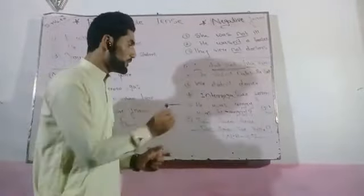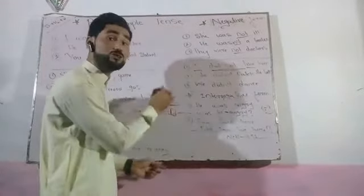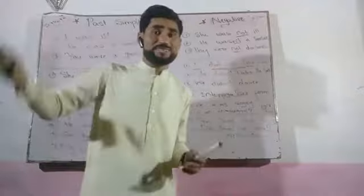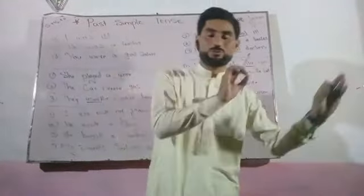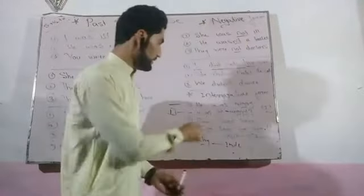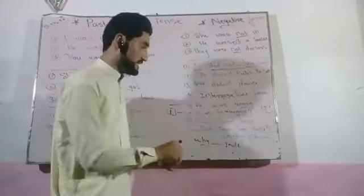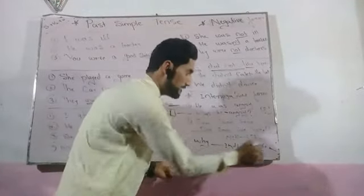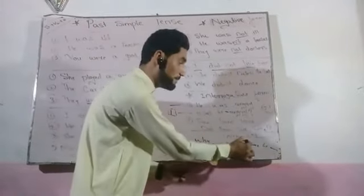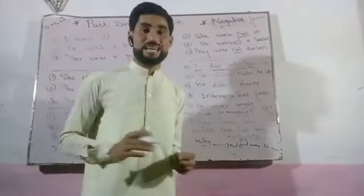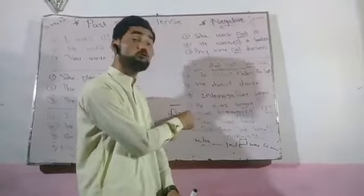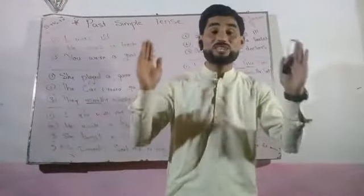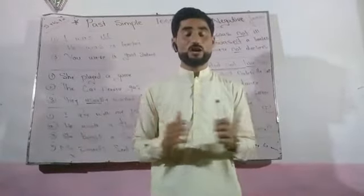Finally, let's learn how to make WH-question sentences of the Past Simple Tense. Just put a WH-word at the beginning of the interrogative sentence. For example: 'Was he angry?' becomes 'Why was he angry?' The WH-word 'why' is placed at the beginning of the interrogative structure: 'Why was he angry?' with a question mark. This is the WH-question sentence — very easy.